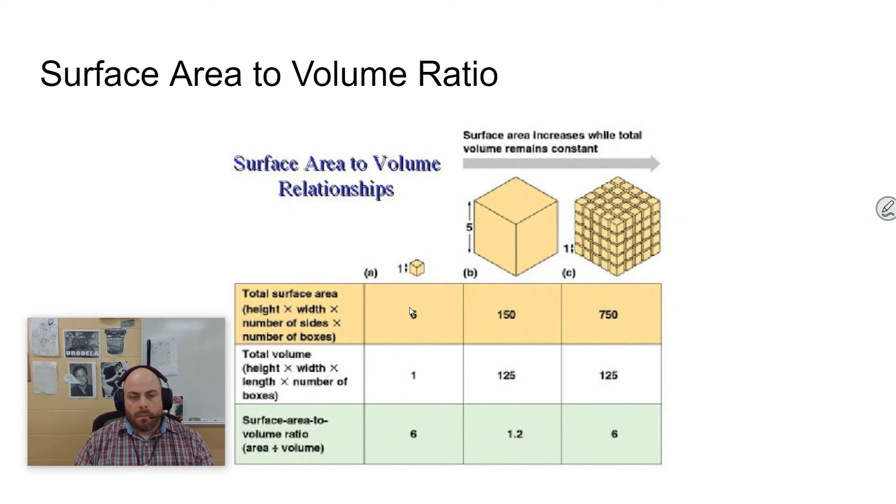And so surface area would be length times width times six if we're talking about a cube, because there's six surfaces on a cube, whereas volume is length times width times height. So that is a cube function. And so volume is going to increase at a much greater rate than area does.